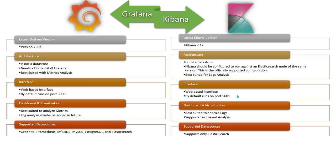Grafana supports a large number of data sources. All the popular time-series databases are supported, including Graphite, Prometheus, InfluxDB, MySQL, PostgreSQL, and Elasticsearch. Kibana, on the other hand, only supports Elasticsearch. So if you want to connect to any of those other data sources with Kibana, you first have to load that data into Elasticsearch, and then you will be able to analyze it using Kibana — everything must go through Elasticsearch.